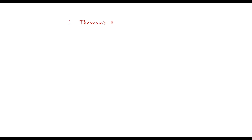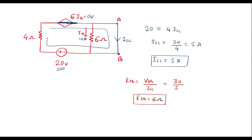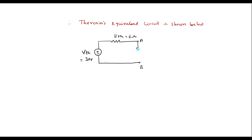Thevenin's equivalent circuit is shown below. In Thevenin's equivalent circuit, Vth is in series with Rth. These terminals are known as A, B. Here Vth value is 30 volts and Rth is 6 ohm. Now to this circuit, we have to connect the 4 ohm load resistance.